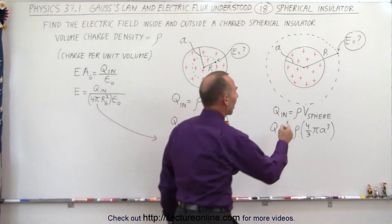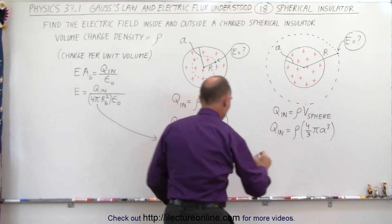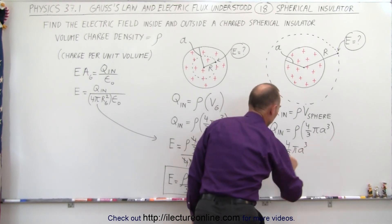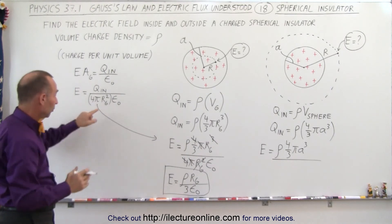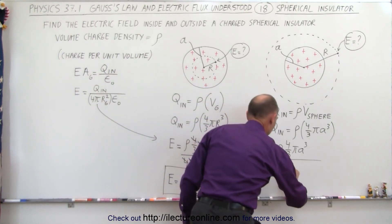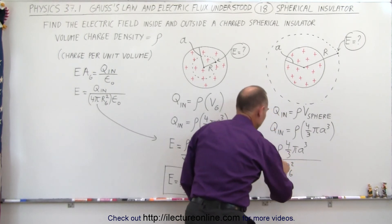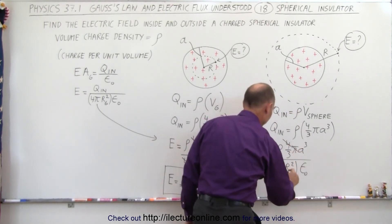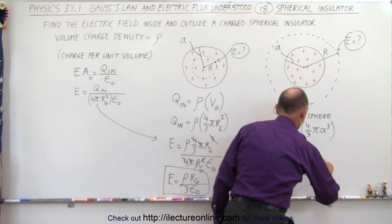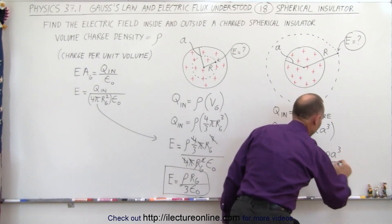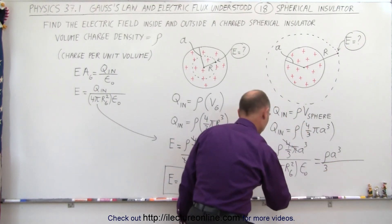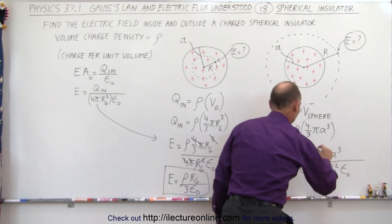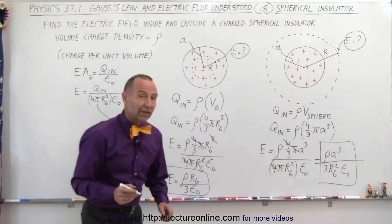For the point outside the sphere, we use the same equation: E equals Q inside — which is density times four-thirds pi a cubed — divided by four pi r_g squared times epsilon sub-naught. The fours and pi's cancel, but notice that a and r do not cancel. So in the numerator we end up with the density times a cubed, and in the denominator we get three times r_g squared times epsilon sub-naught. This is the strength of the electric field outside the sphere.